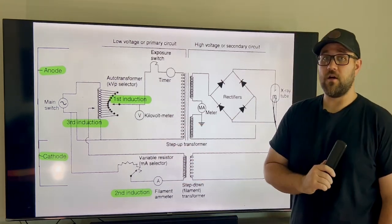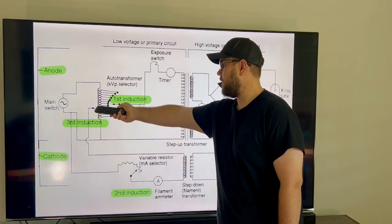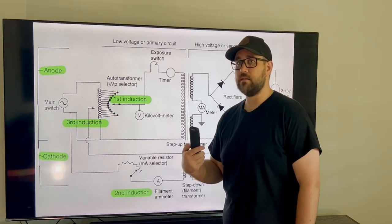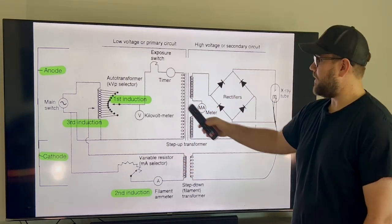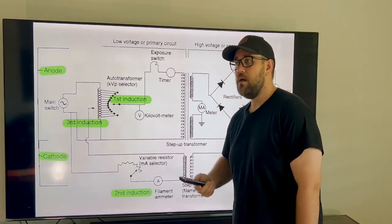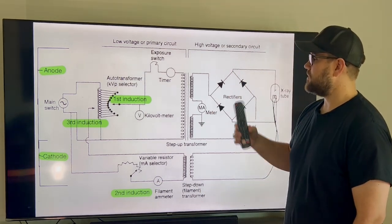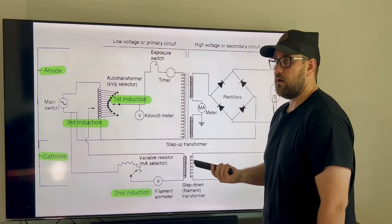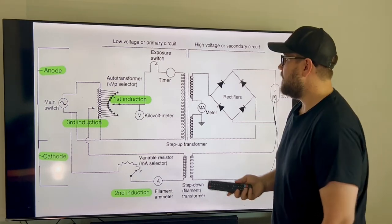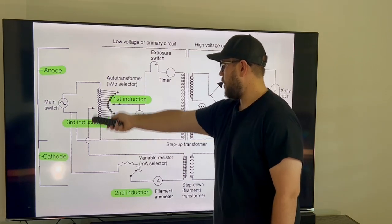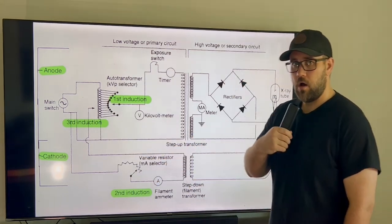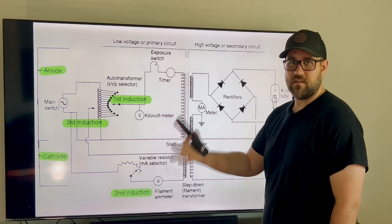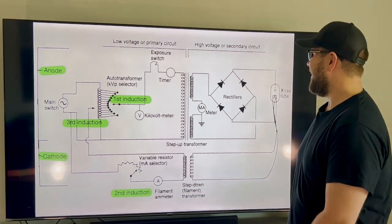We're going to have our third induction right back at the auto transformer with this line being induced back in. Now something I want to preface is I went one step at a time and it was pretty slow, but in this process of starting it up, setting the technique, and having everything run, because it's electrical current, it's going to happen really fast. These three lines that I just talked about here are going to be happening pretty much all at the same time very quickly. So just know that, but in this demonstration, obviously we can't see that.